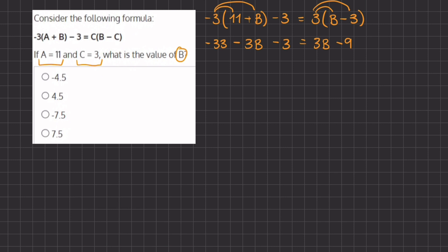Now we're going to simplify our terms and we have negative 36 minus 3b equals 3b minus 9.